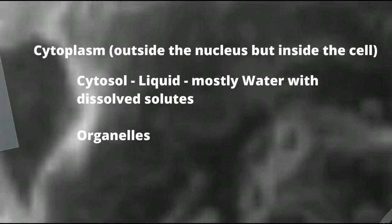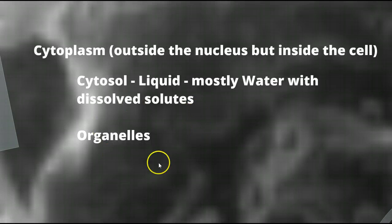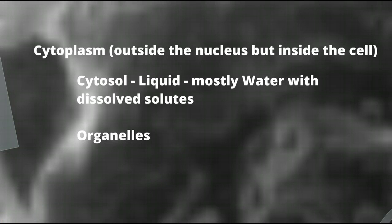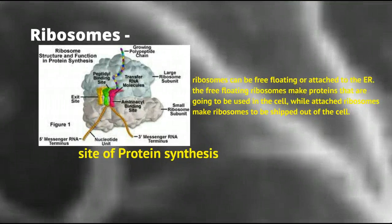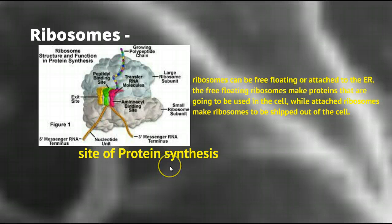Now let's move out into the cytoplasm. The cytoplasm includes the cytosol, which is mostly water with dissolved solutes, and the organelles. We'll start with the ribosomes. The ribosomes are the assembly line workers of the cell factory — they're the site of protein synthesis. Ribosomes can be free-floating, where they make proteins for use in this cell, or they can be attached, where they make proteins to be shipped out of the cell.